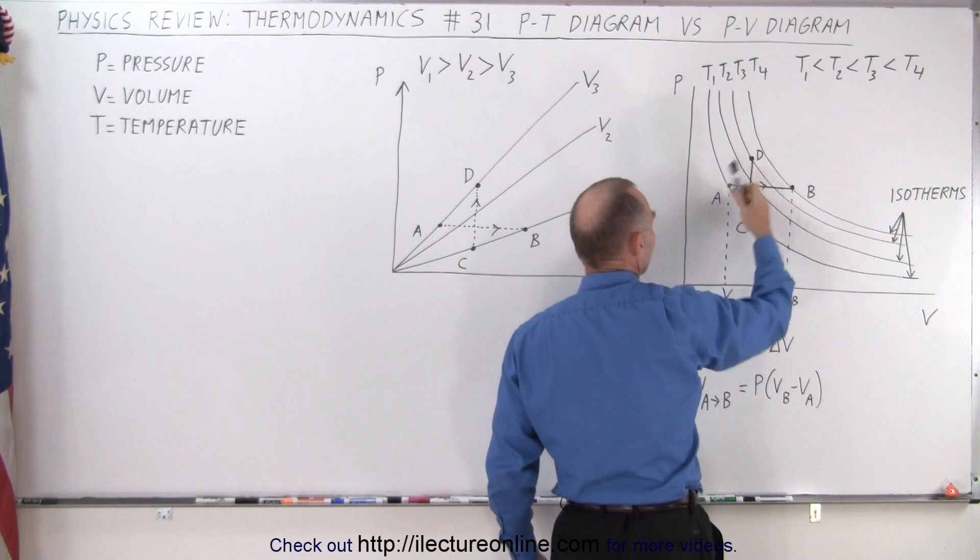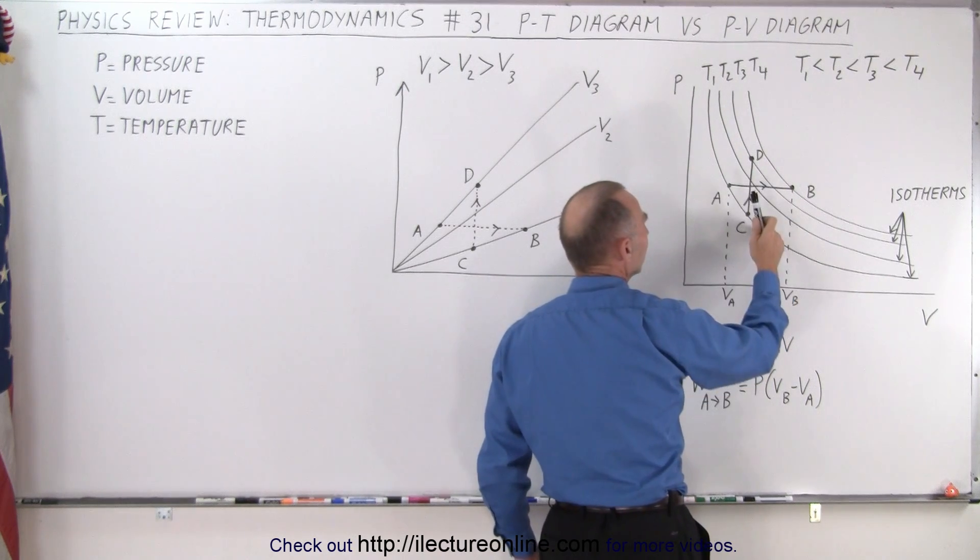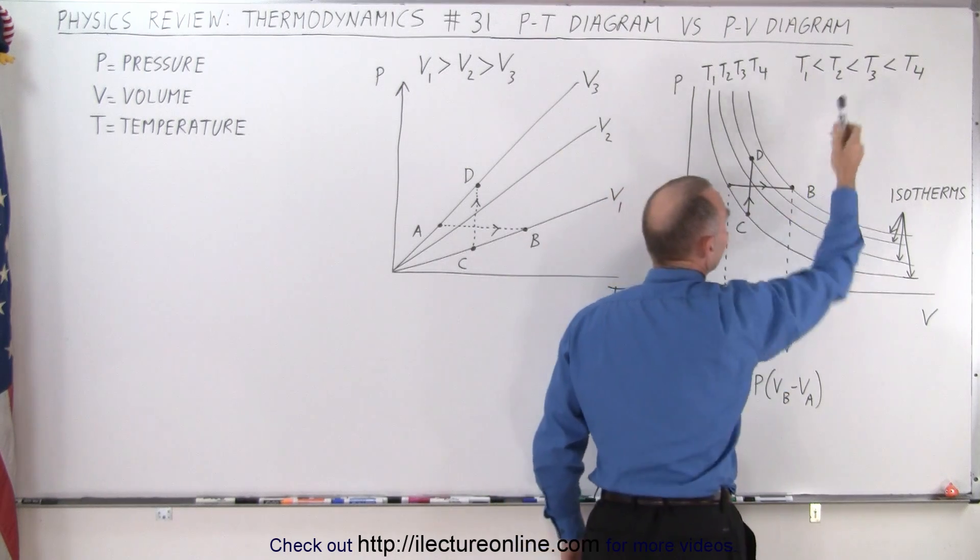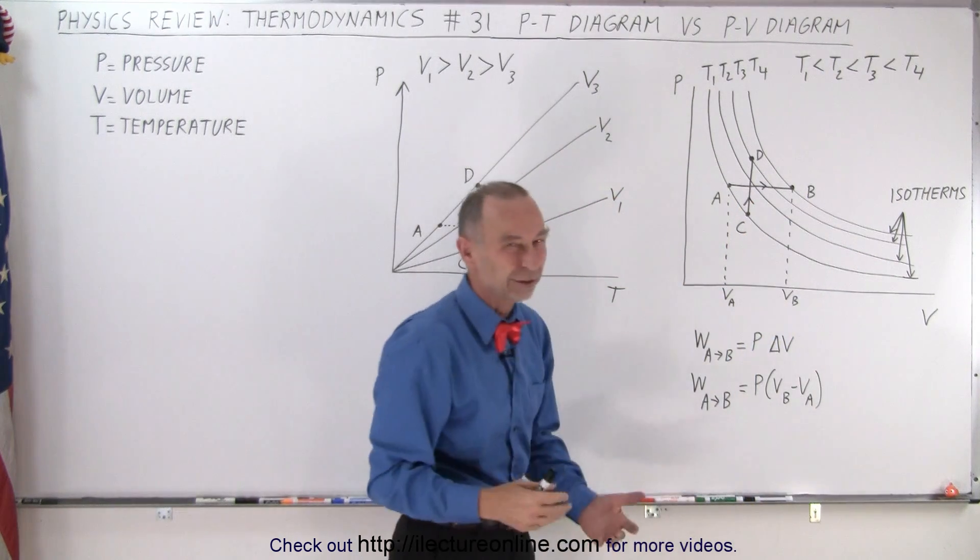Notice that T1, the one that's closest to the corner here, represents the lowest temperature, and the line that's furthest from the point right here represents the highest temperature. They're called isotherms.